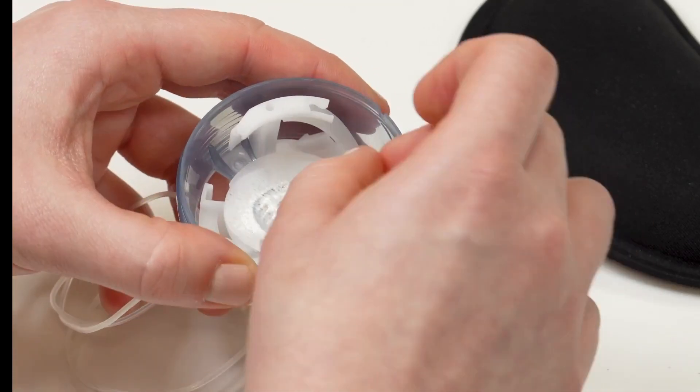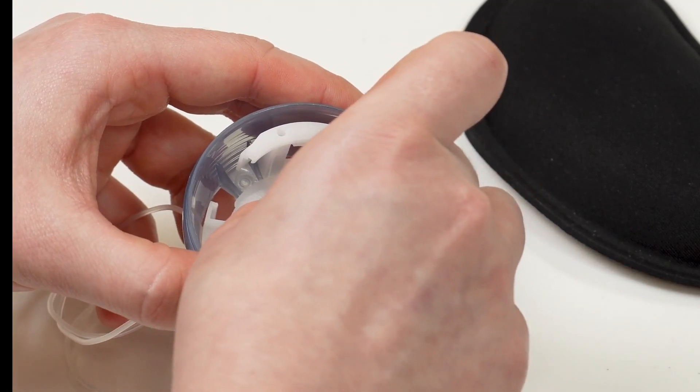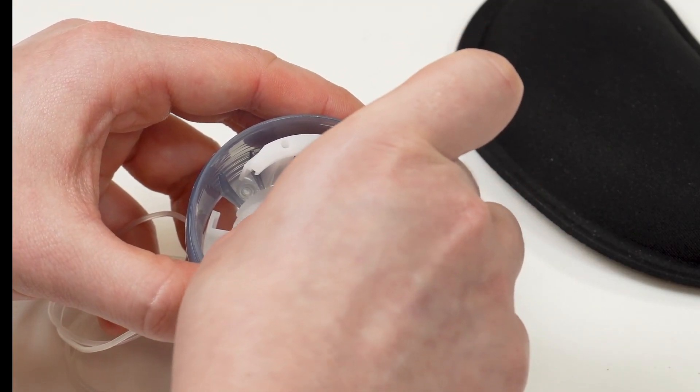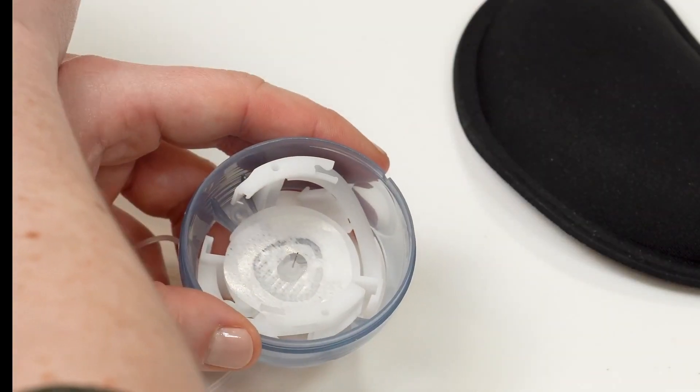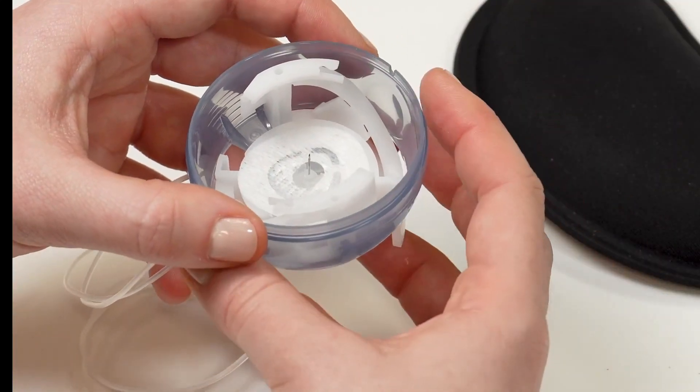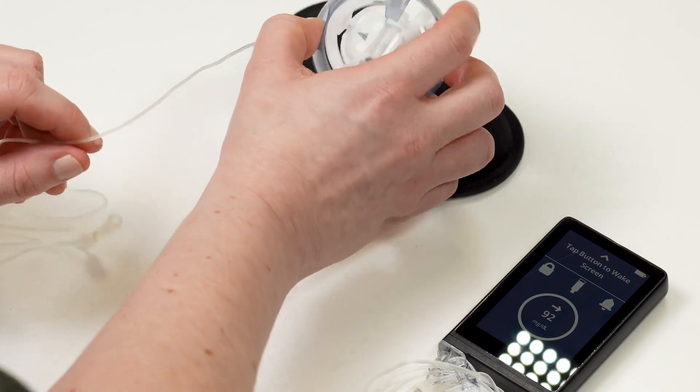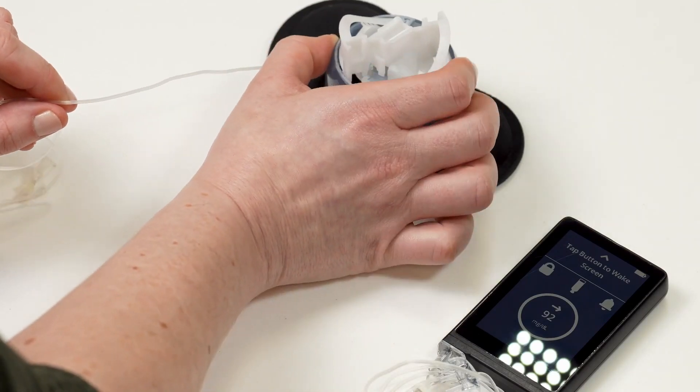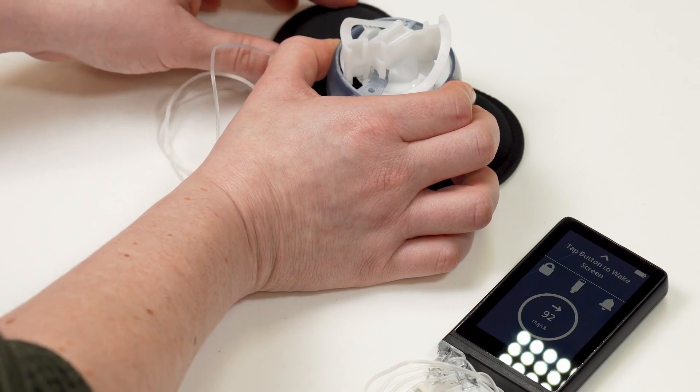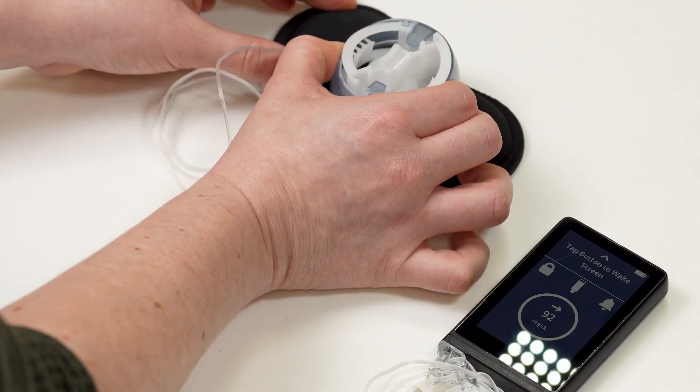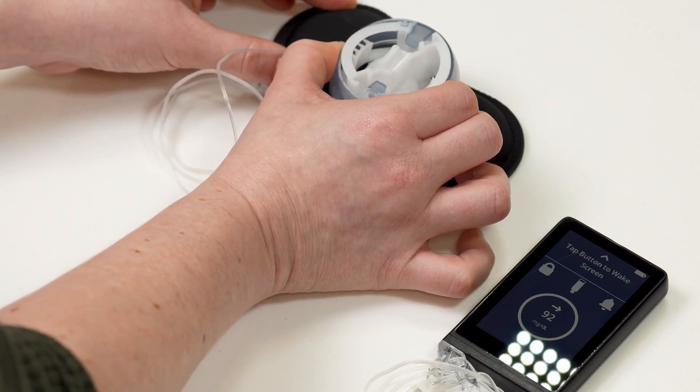Gently twist the blue needle guard off of the needle. Keeping the tubing out of the way, place the inserter on your chosen insertion site on your body. Put your fingers on the circles on the outside of your inserter. Squeeze both fingers at the same time to insert your infusion set.